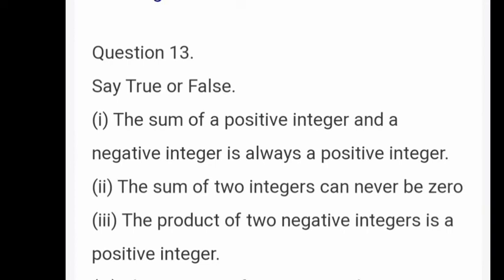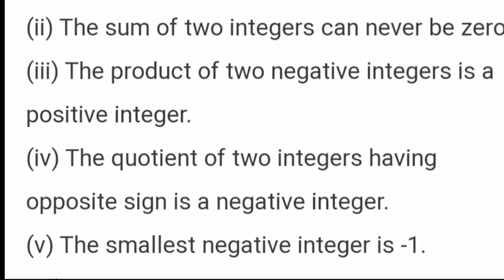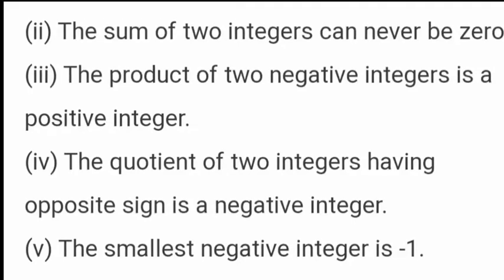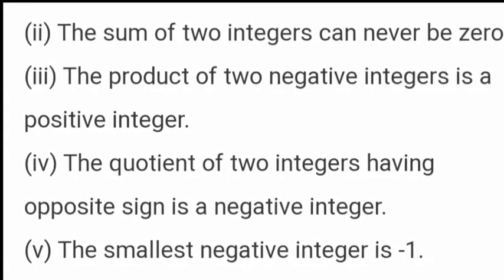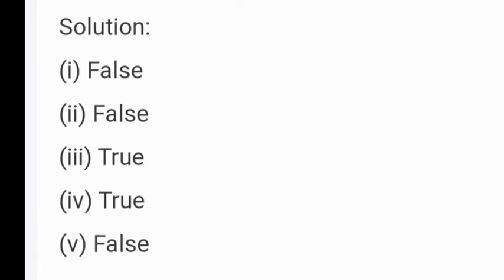True or False: Question 1 — the sum of a positive integer and a negative integer is always a positive integer — False. Question 2 — the sum of two integers can never be zero — False. Question 3 — the product of two negative integers is a positive integer — True. Question 4 — the quotient of two integers having opposite signs is a negative integer — True. Question 5 — the smallest negative integer is minus 1 — False. Take down the answers carefully in your classwork book.